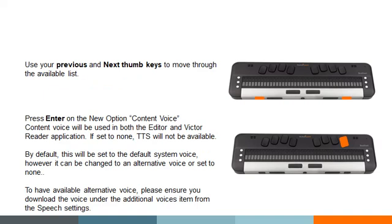I'm going to press the letter C to find this option. Content voice — mine is currently set to Will. If I press enter here, if you have an additional voice added you can choose what you want that to be: Sharona, Will, or none. You have a none option in this menu, so you can turn your content voice off, meaning when you go into Victor Reader or the editor, where you could traditionally have text read aloud, you would have nothing spoken.